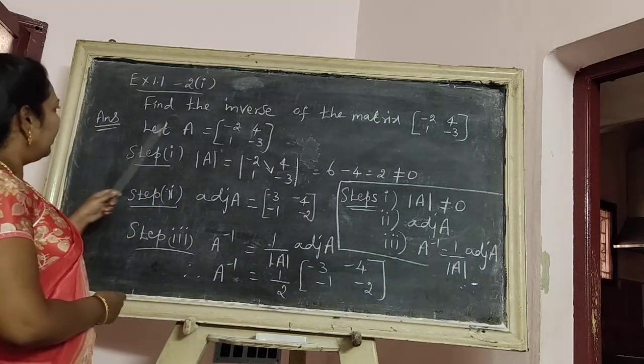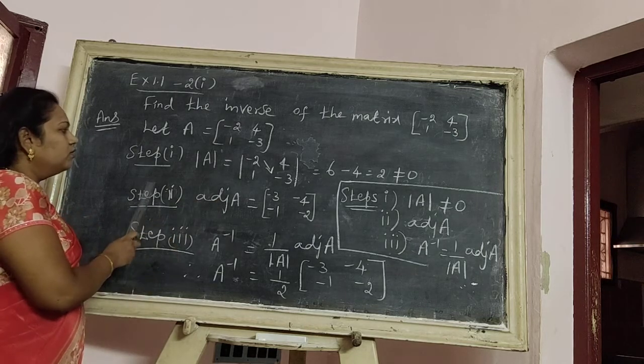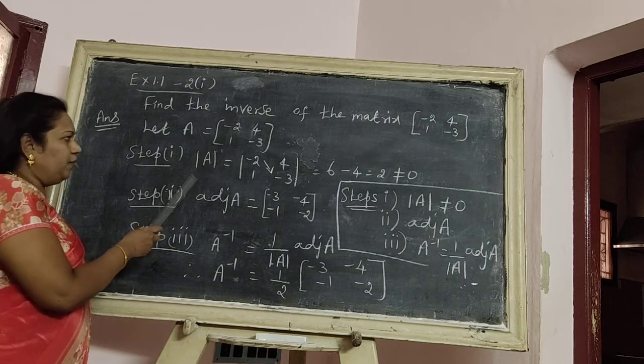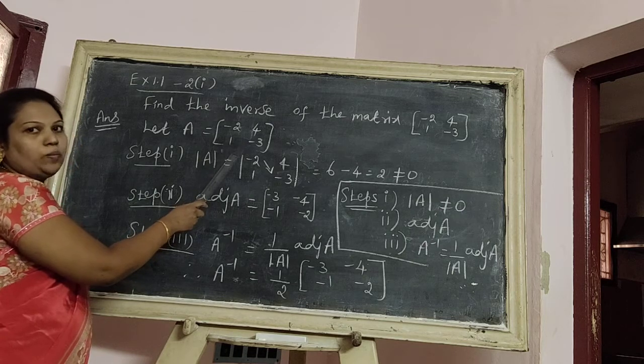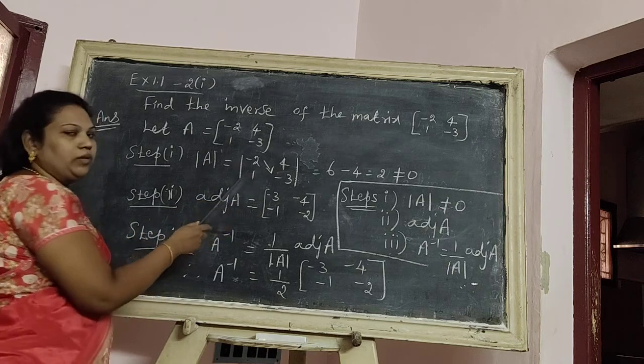Given A equal to [-2, 4, 1, -3]. Step one, find the determinant of A. This is a 2 by 2 matrix. Therefore, we find the cross multiplication only.